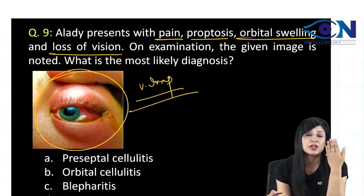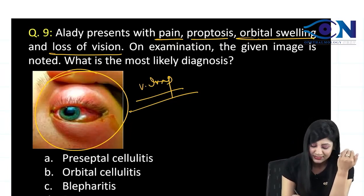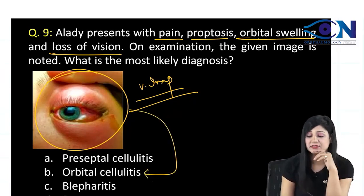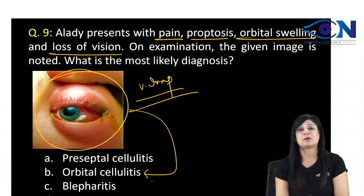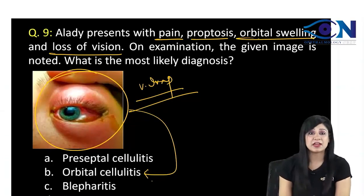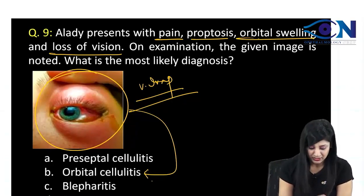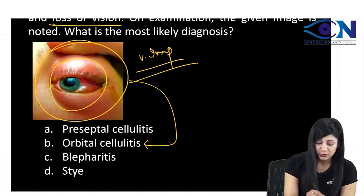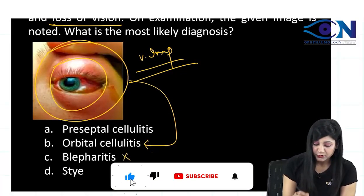You can see, even without reading the question, that this is orbital cellulitis. We are having pain, proptosis, and swelling, and this image has been given. You can see this proptosis. Proptosis is not found in blepharitis as well as stye.